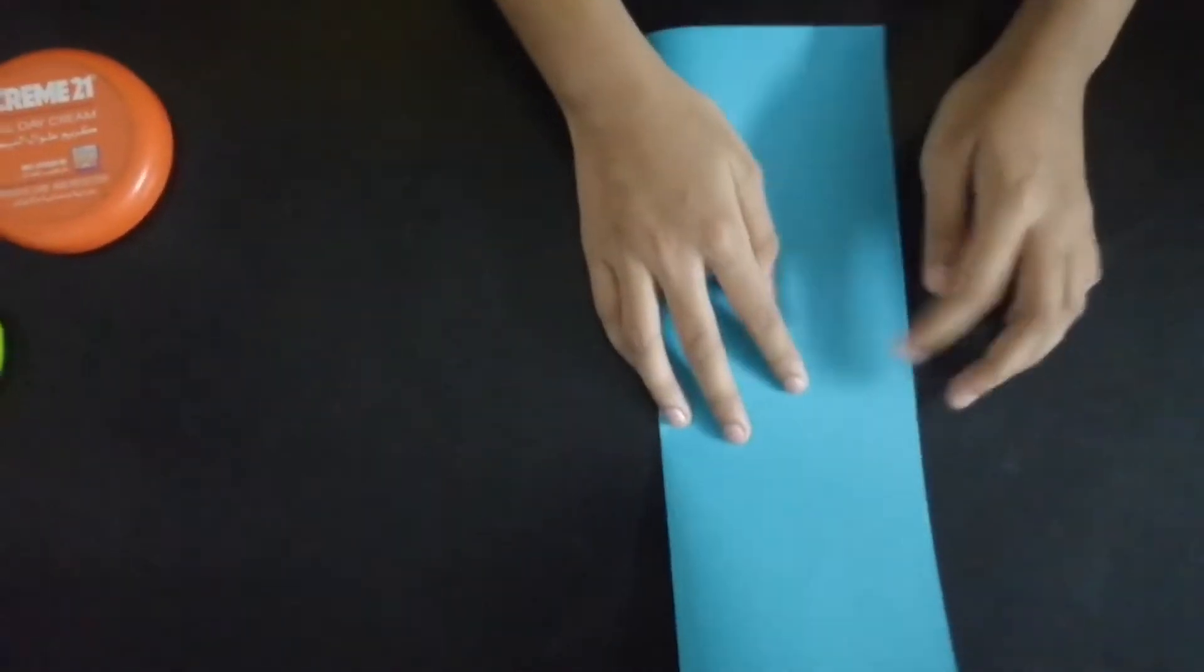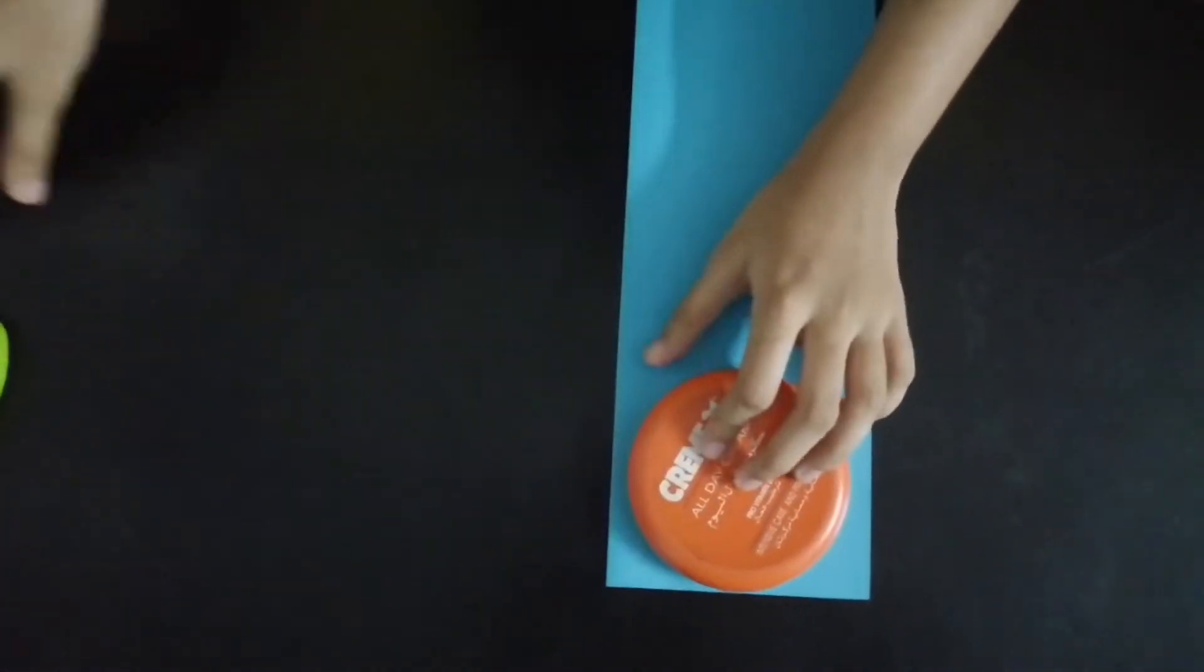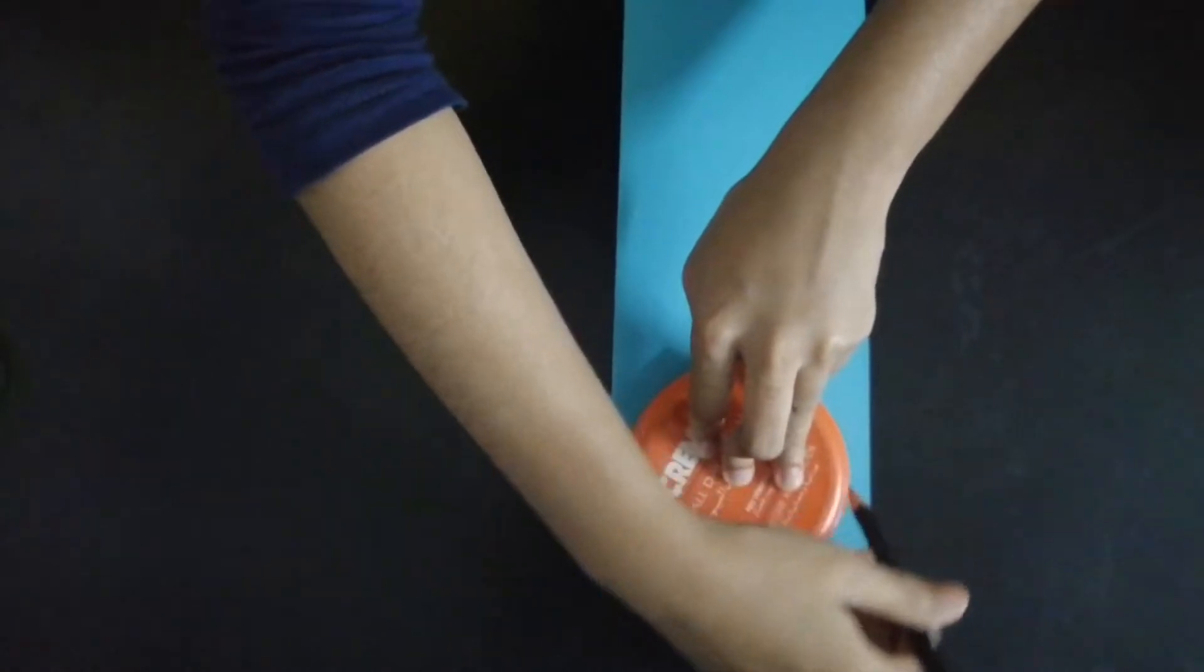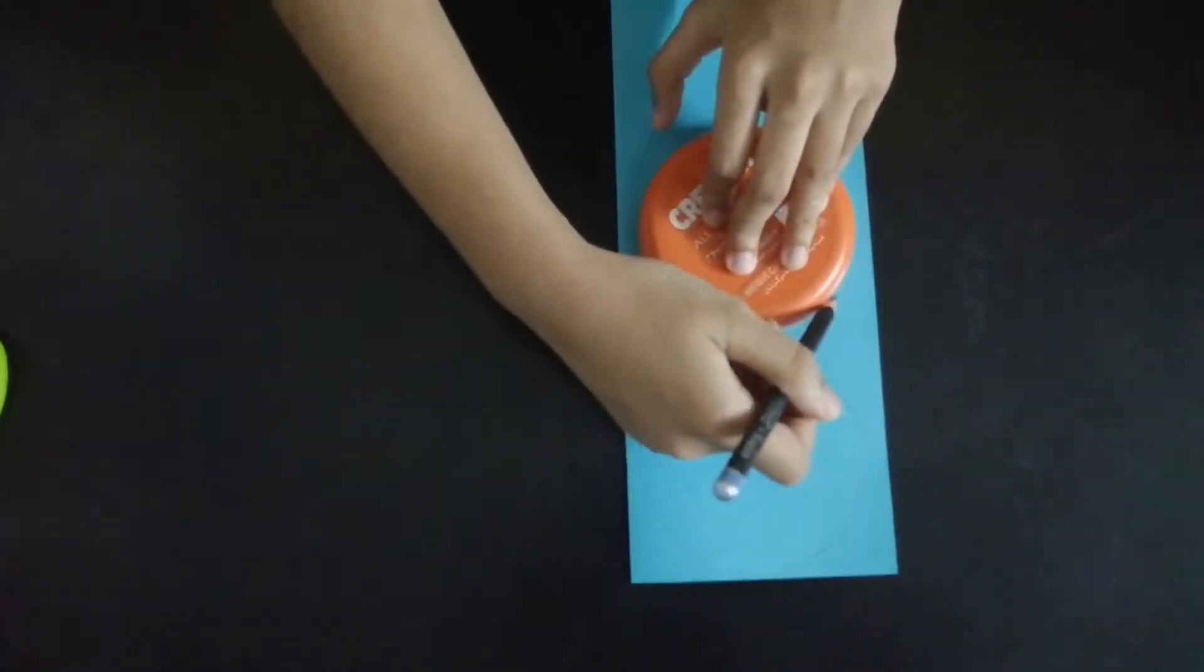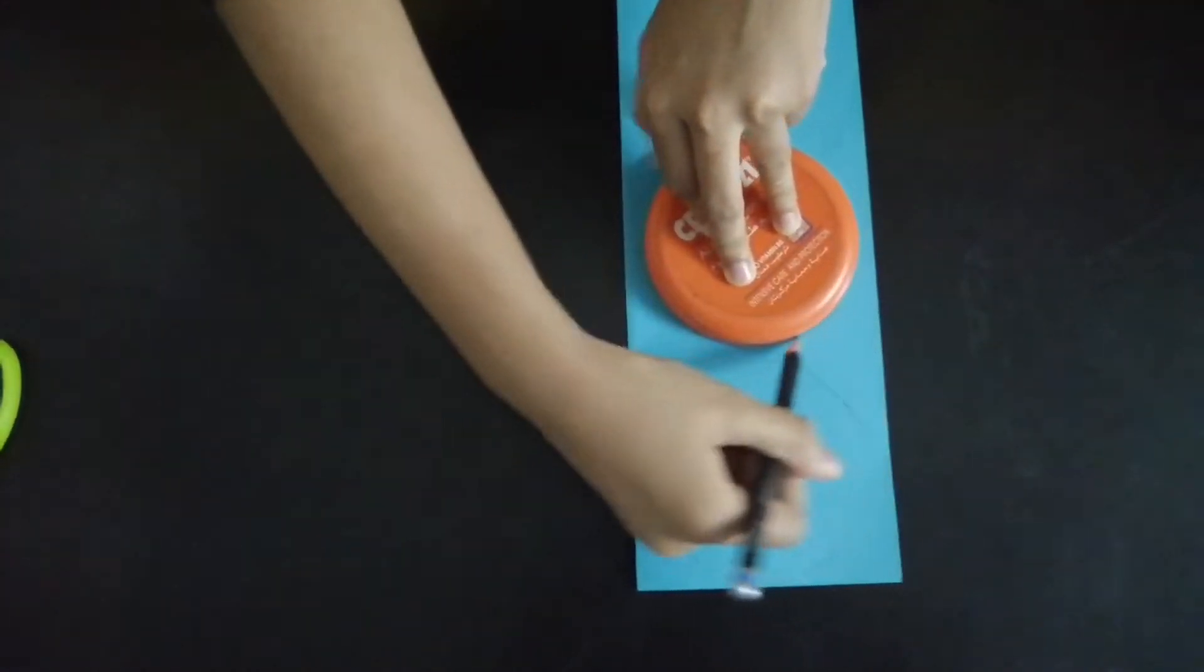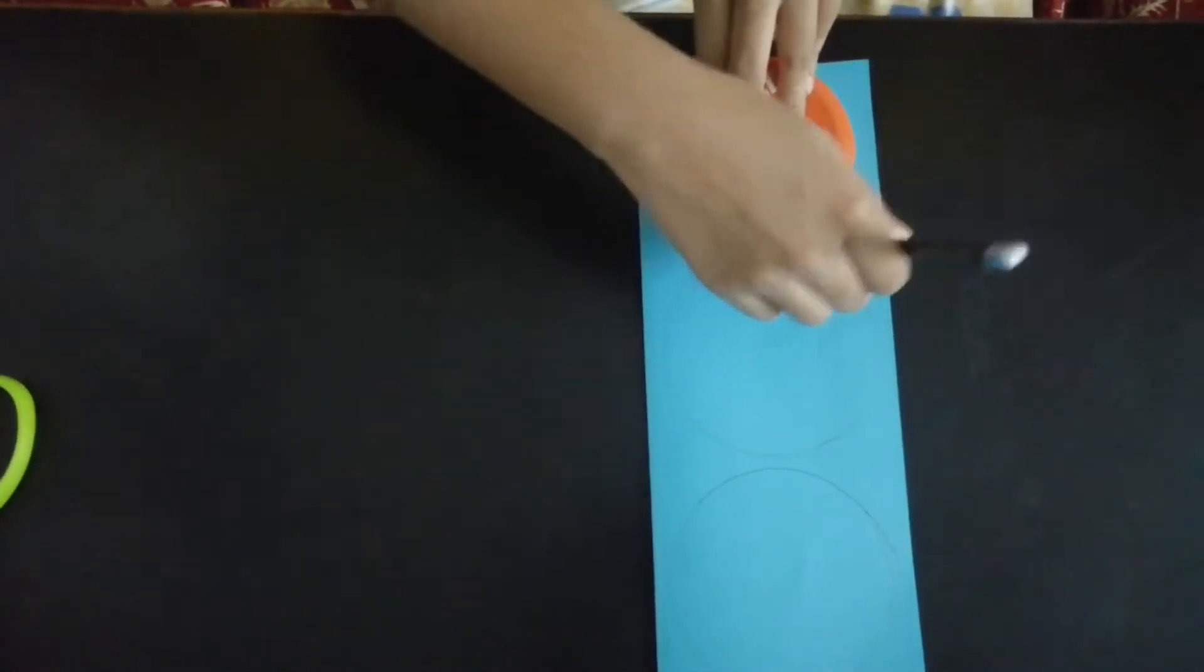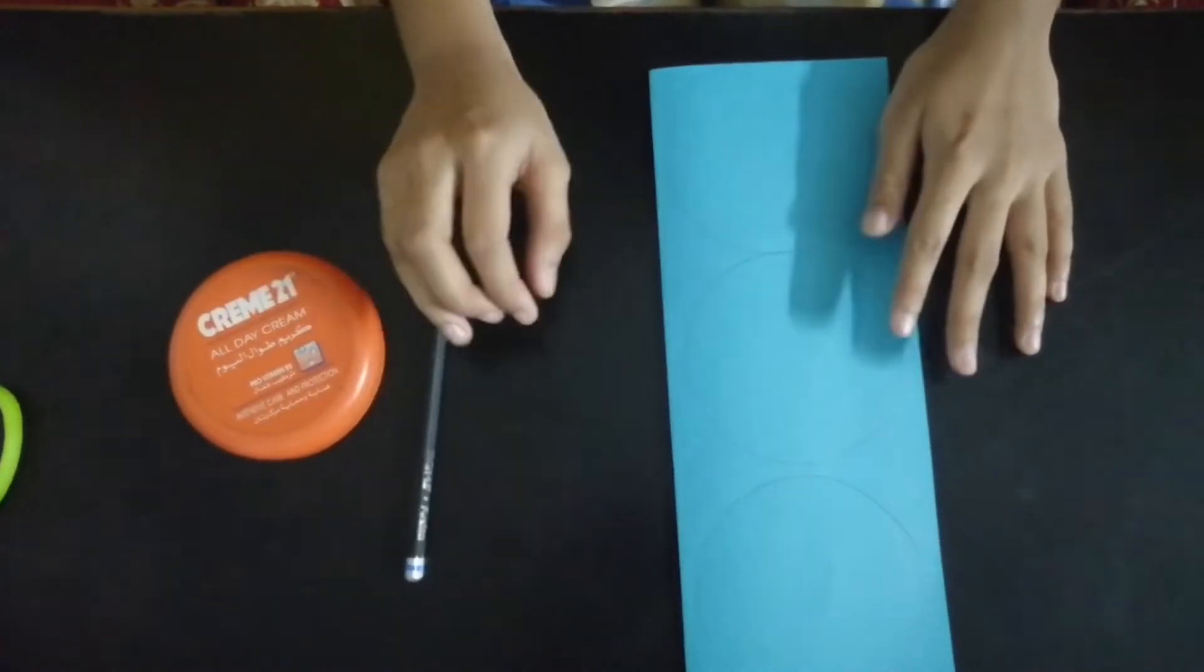Then we have to fold the paper in half and draw a circle. We have to draw as many circles as we can. In this paper, I can draw only 3 circles.